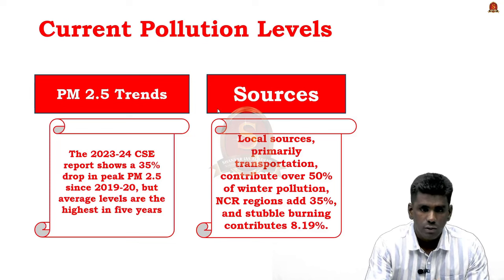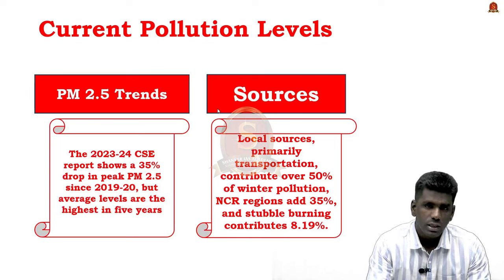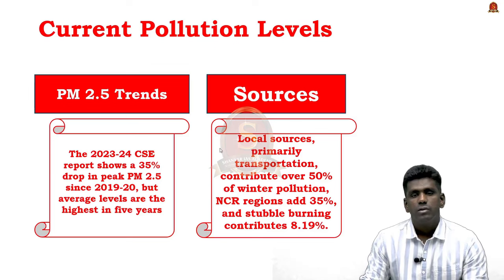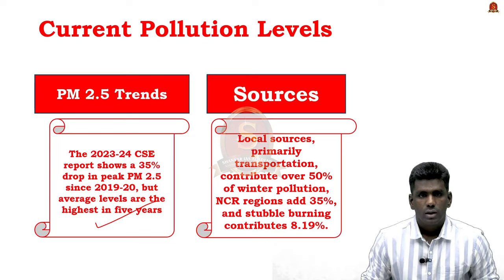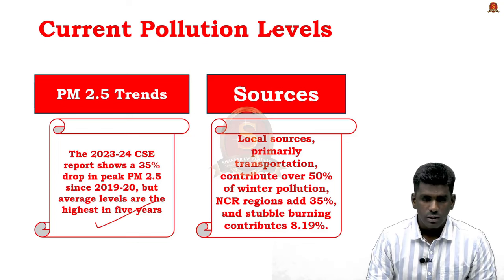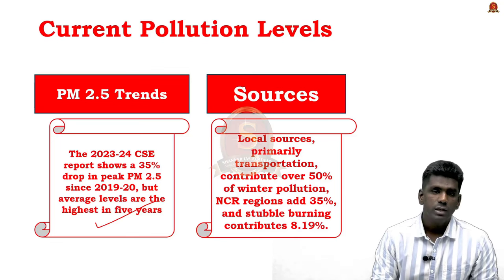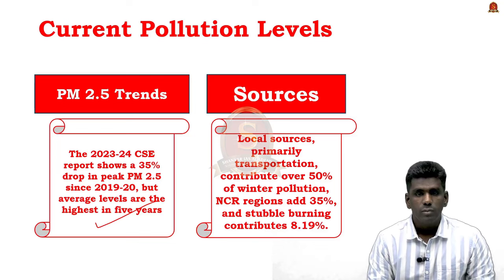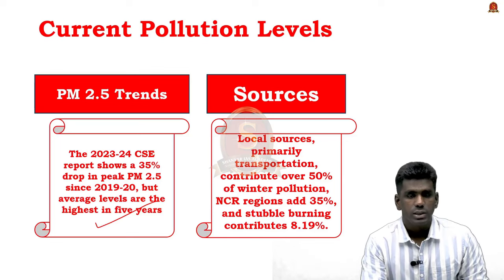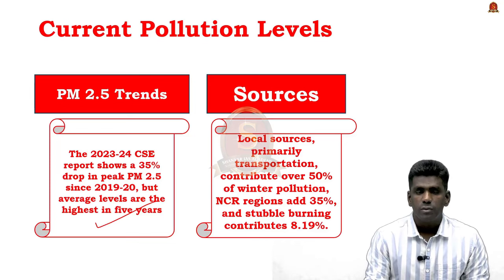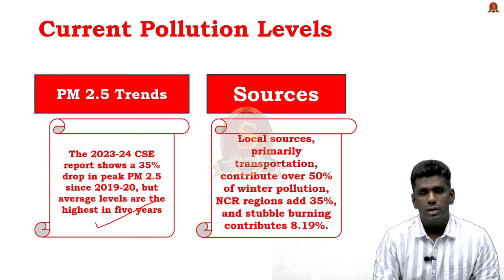According to a 2023 analysis by the Centre for Science and Environment, PM 2.5 levels have decreased by about 35% since 2020, but average daily levels have stagnated and are now the highest in the past five years. Local sources such as transportation contribute over 50% to winter pollution, pollution from neighboring regions accounts for 35%, and stubble burning contributes only about 8.19%. Most pollution comes from vehicular exhaust within Delhi itself.